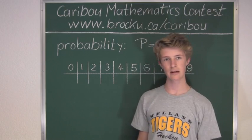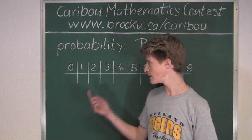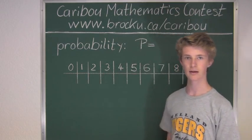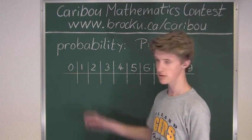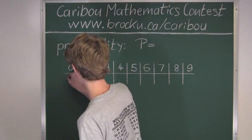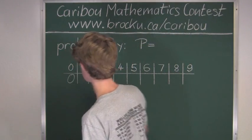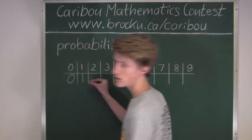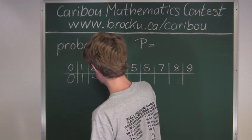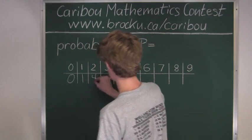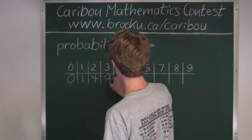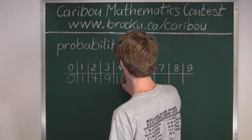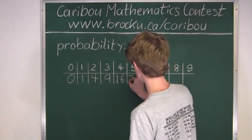So since we're dealing with squares, we want to find out the square of each number from 0 to 9. So 0 times 0 is 0. 1 times 1 is 1. 2 times 2 is 4. 3 times 3 is 9. 4 times 4 is 16. 5 times 5 is 25.